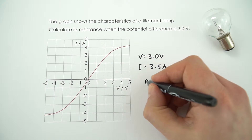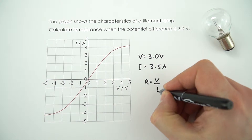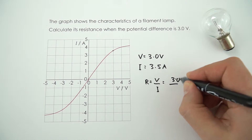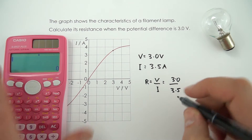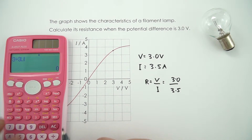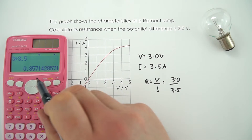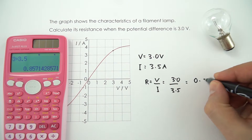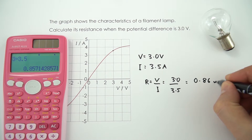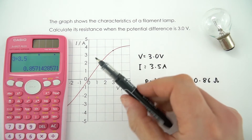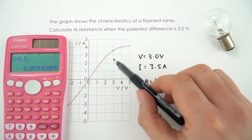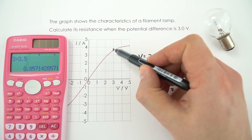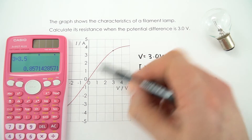The resistance at any point is equal to V divided by I, so that's 3 divided by 3.5. Using a calculator, this gives a value of 0.857, so the resistance at that point is 0.86 ohms. To find resistance from this graph, we're not taking the gradient — we're simply looking at the ratio of V to I read off from the graph.